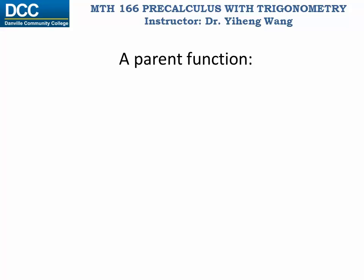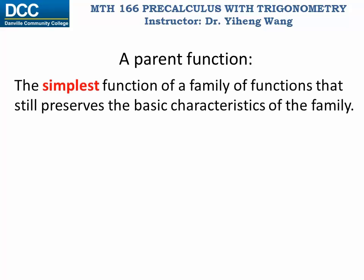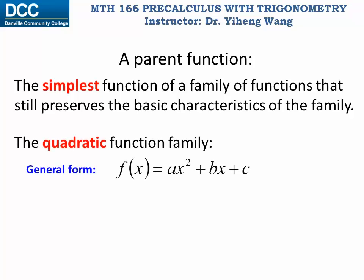A parent function refers to the simplest form of a family of functions. A family of functions share some common characteristics, and the parent function is the simplest one that still preserves the basic characteristics of this family. For example, for the quadratic function family, the general form is f equals ax squared plus bx plus c, where a, b, c are coefficients. b and c can be all real numbers, and a can be any non-zero real number. The parent function for the quadratic function family is simply f equals x squared — the simplest one.